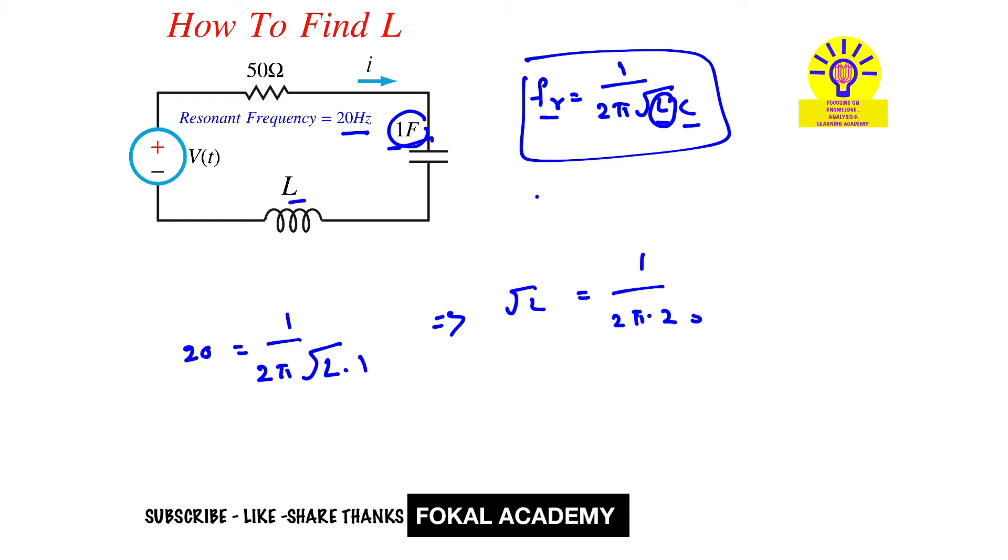Now cross multiply, so it becomes L equals 1 over 2π times 20, whole squared. By simplifying this we get 0.0006332, which equals 63.32 microhenry.